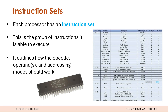The instruction set is essentially a massive table — it can run into hundreds and hundreds of pages — giving us the different opcodes, different operands, and different addressing modes for these instructions. Here is a snippet from a really basic and quite old CPU from the 1980s, just because it was a clear example, but you can search up CPUs and find their instruction set.